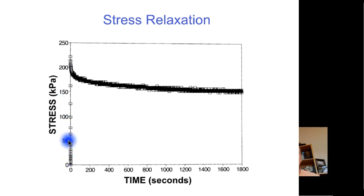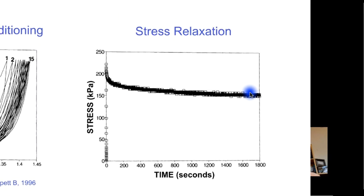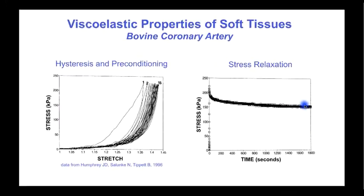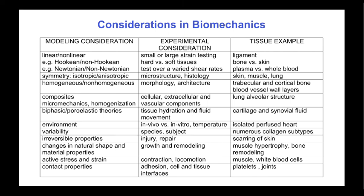Another common property of biological tissues that is not elastic is stress relaxation. When the strain is increased and held constant over time, the stress increases instantaneously but then decays until it settles at a new lower value. This so-called stress relaxation is commonly seen in soft biological tissues. All of these properties — hysteresis, preconditioning, and stress relaxation — are displayed by materials known as viscoelastic materials, and viscoelasticity is a common and important property of soft tissues in biomechanics.